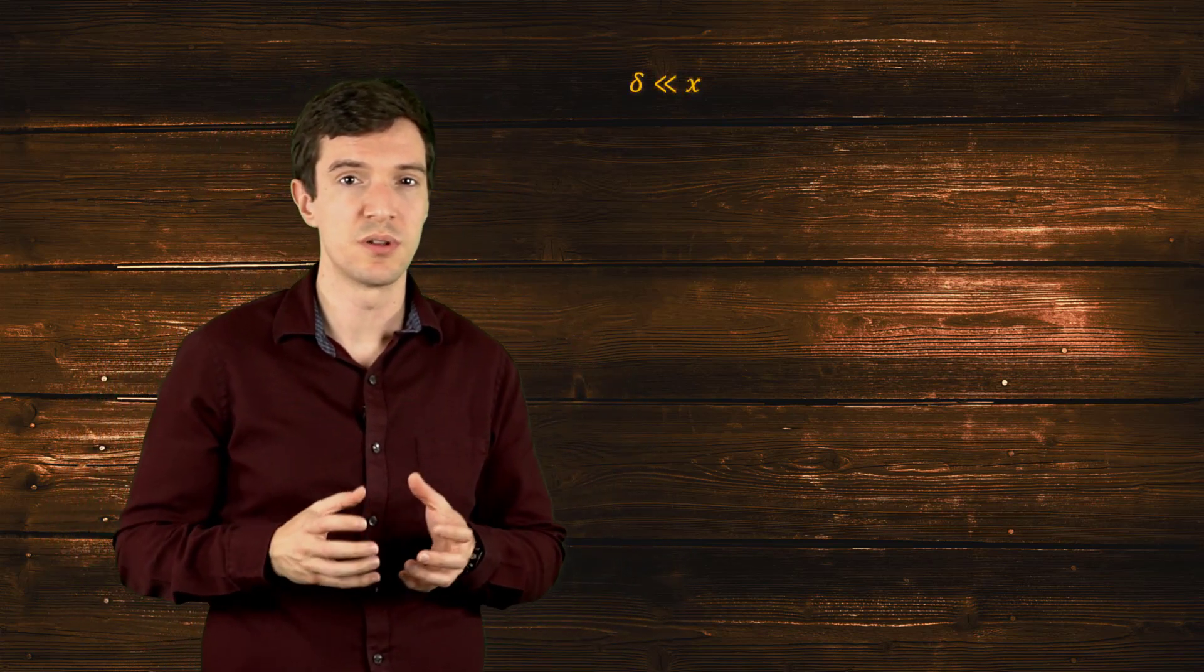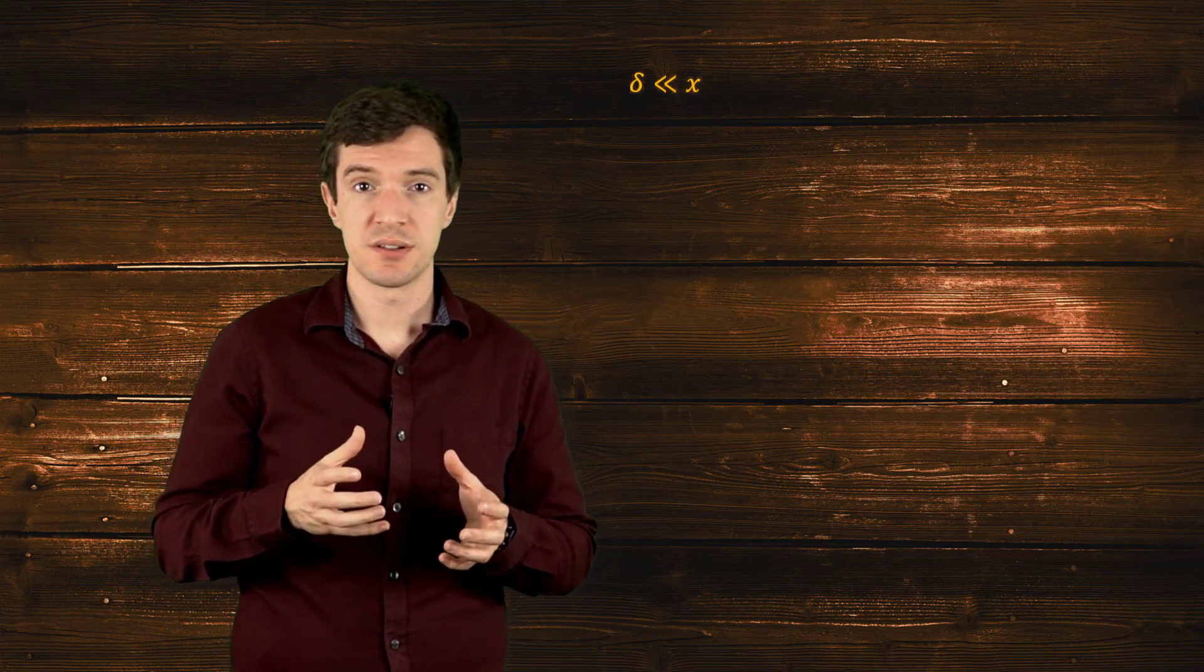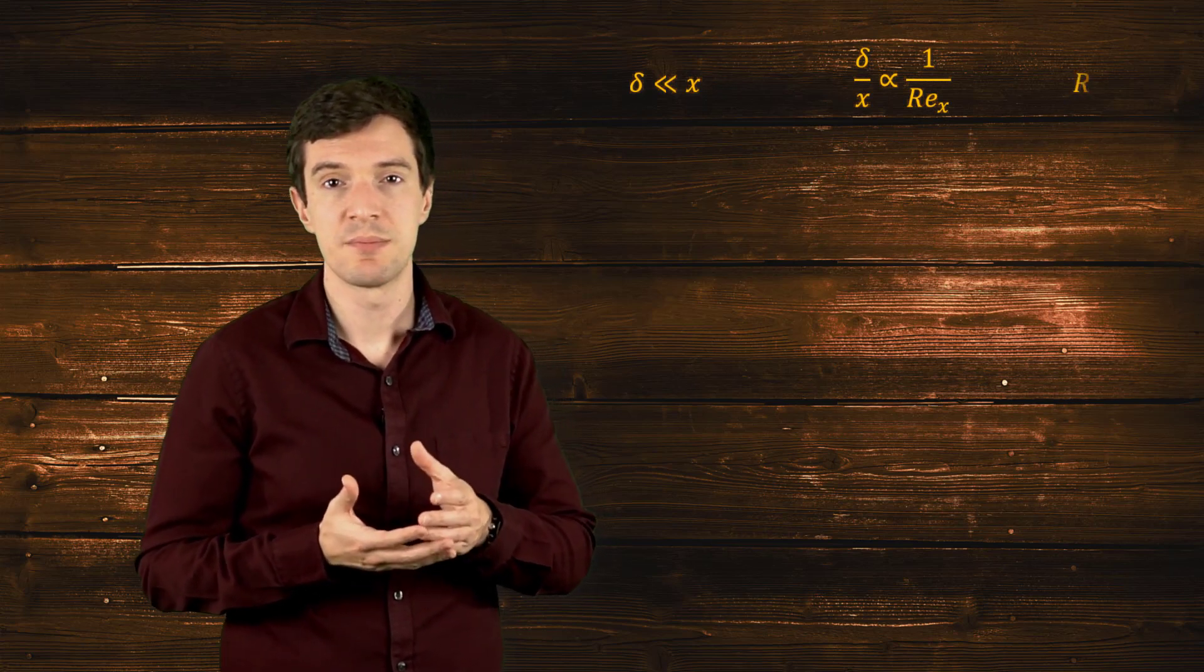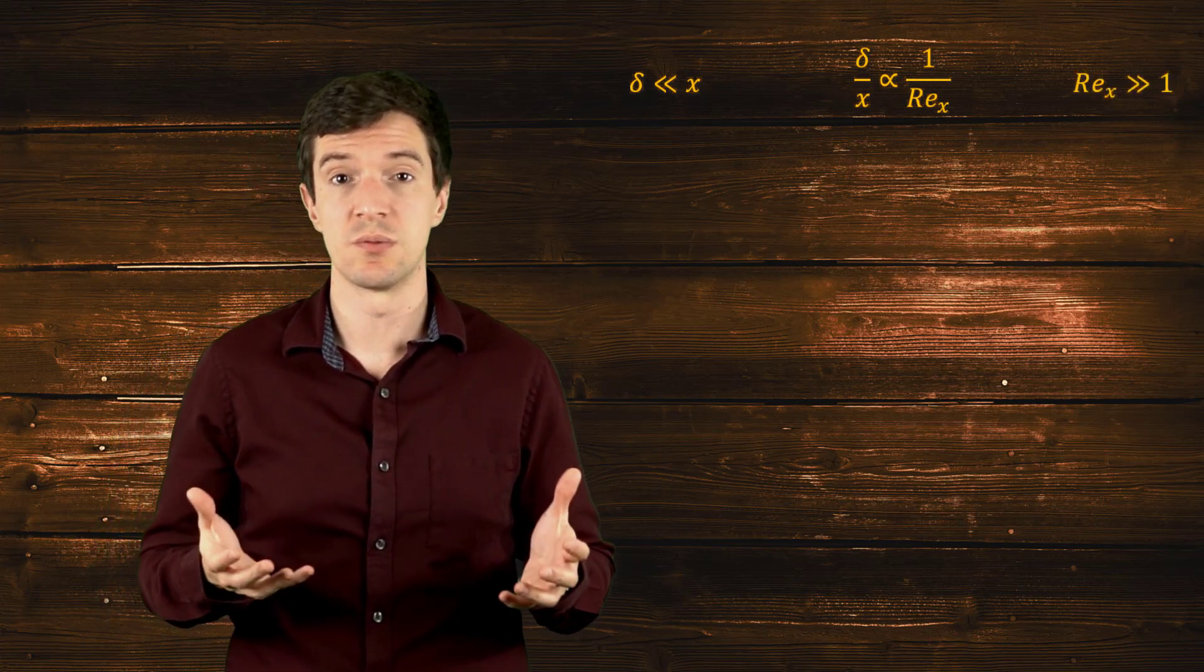A thin boundary layer presents a thickness that is extremely smaller compared to the plate or body size. Based on the results of the integral analysis, we obtain that the Reynolds number must be much larger than 1.